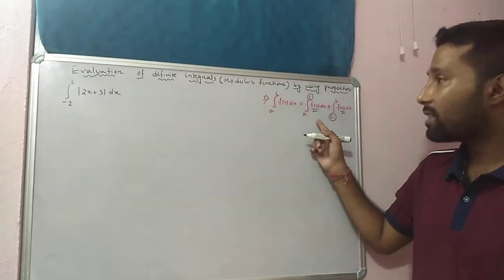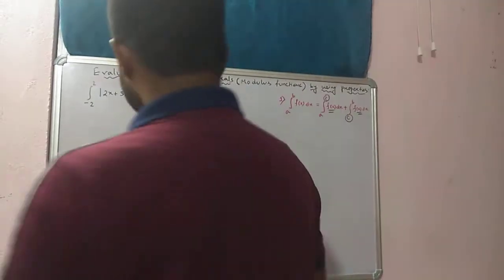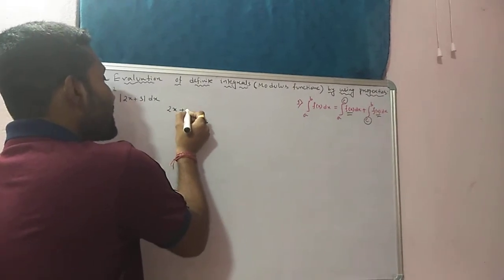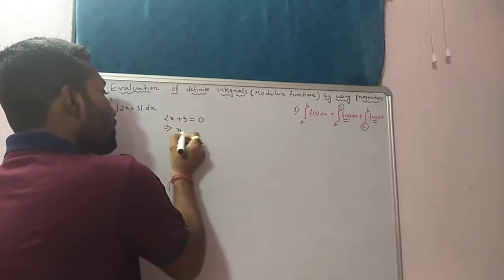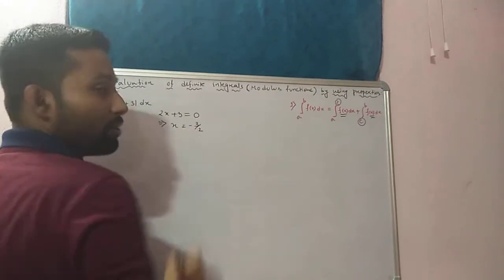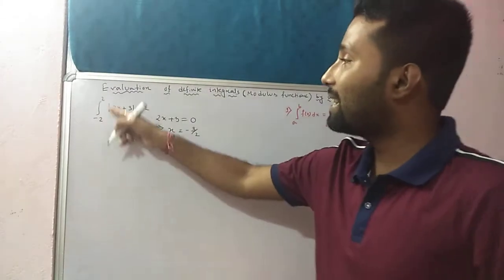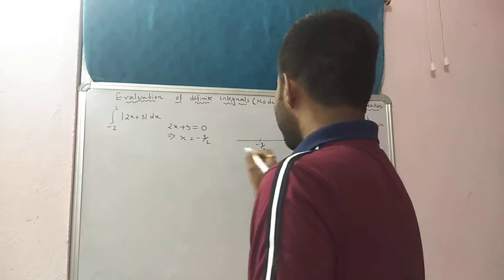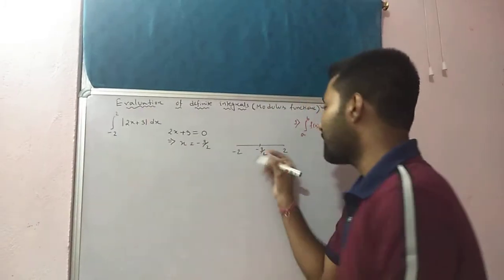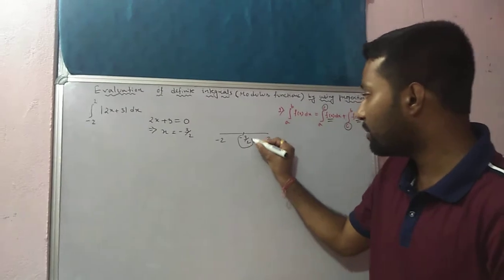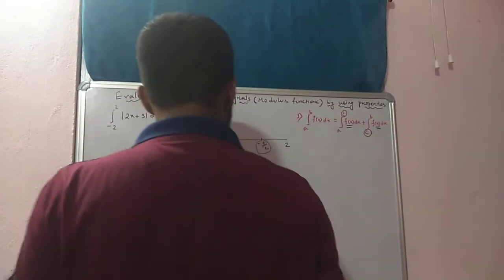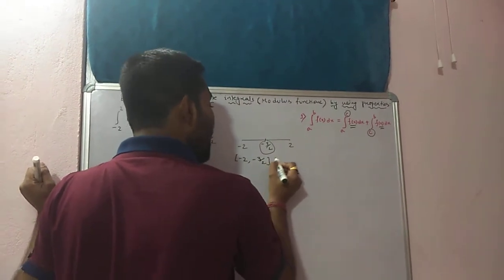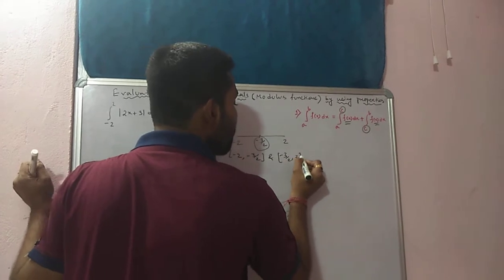First you need to find the value of c. To find c, put the expression inside the modulus equal to zero: 2x + 3 = 0, therefore x = minus 3 by 2. Now check whether minus 3 by 2 lies in the interval minus 2 to plus 2 — yes it does. So this value divides the number line into two sub-intervals: minus 2 to minus 3 by 2, and minus 3 by 2 to plus 2.